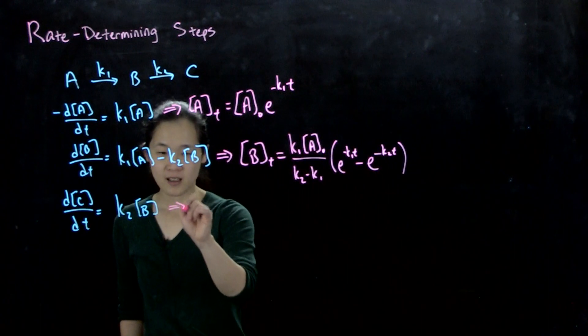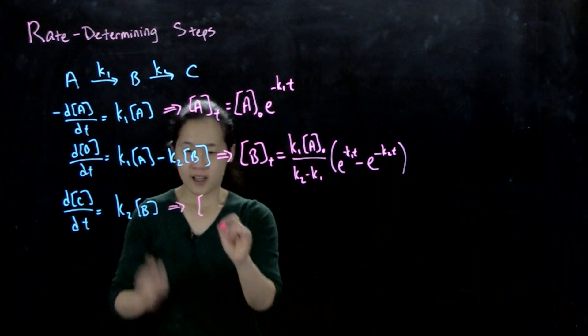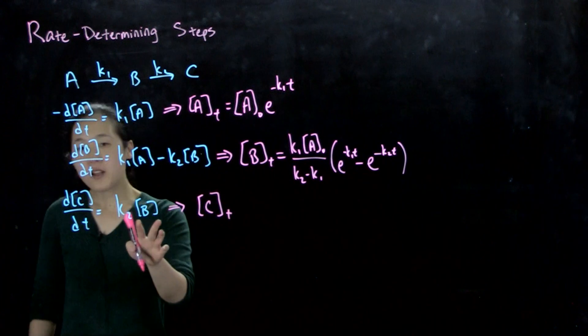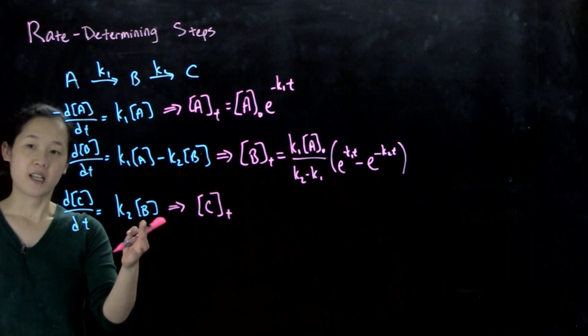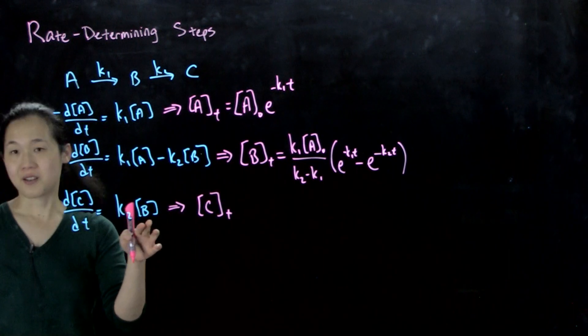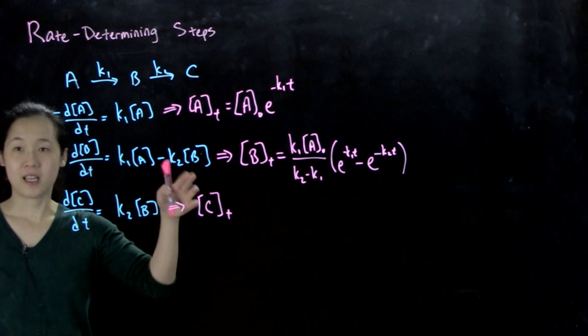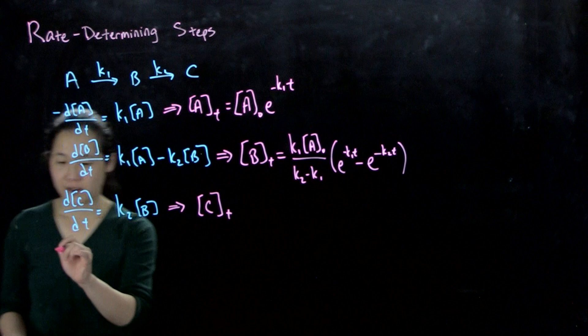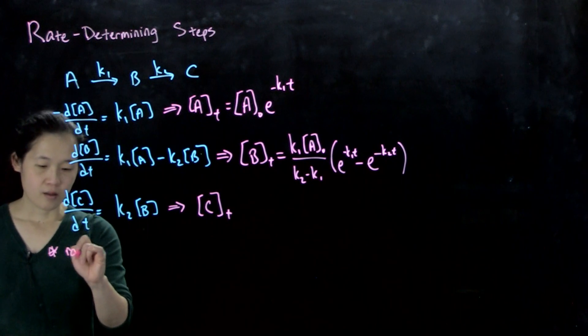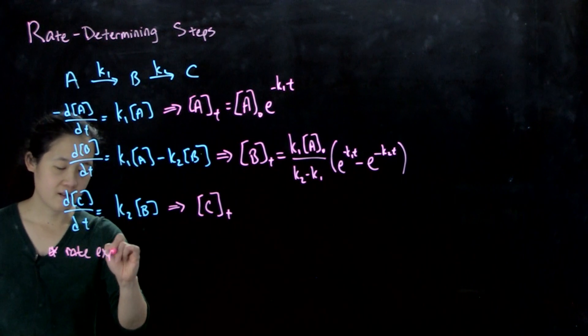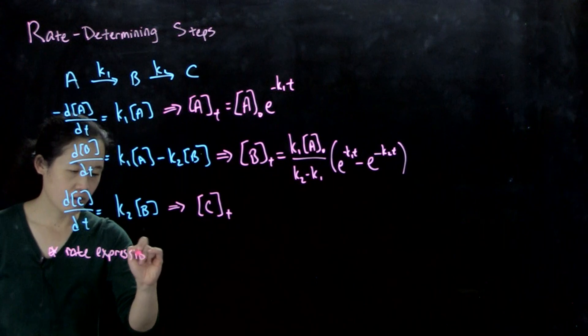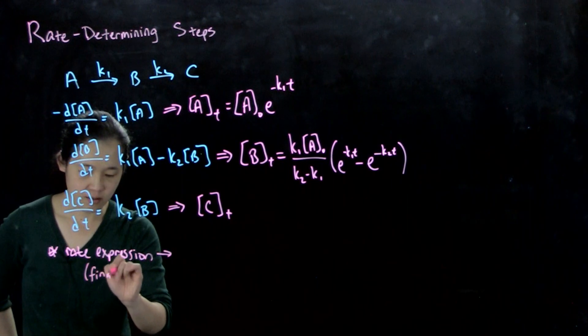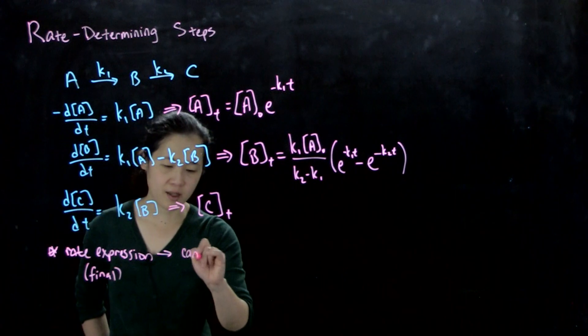And then lastly, we have C over time. So we could integrate this and express this as B concentration, e to the negative k2t. But B is an intermediate. So let me put as a note, rate expression, or for the final rate expression, can never include an intermediate.